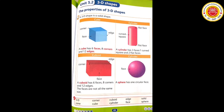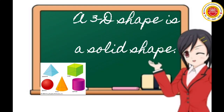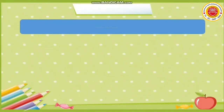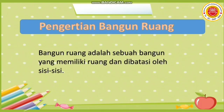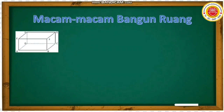Sekali lagi, Miss ajak kalian semua untuk membuka buku Students Book halaman 89. A building is a solid shape. Artinya, bangun ruang adalah bentuk tetap. Kita lihat dulu pengertian dari bangun ruang. Bangun ruang adalah sebuah bangun yang memiliki ruang dan dibatasi oleh sisi-sisi. Ini beda ya dengan bangun datar. Kalau bangun datar itu hanya berbentuk datar, sedangkan bangun ruang memiliki ruang di dalamnya. Sekarang kita lihat contoh-contoh bangun ruang.